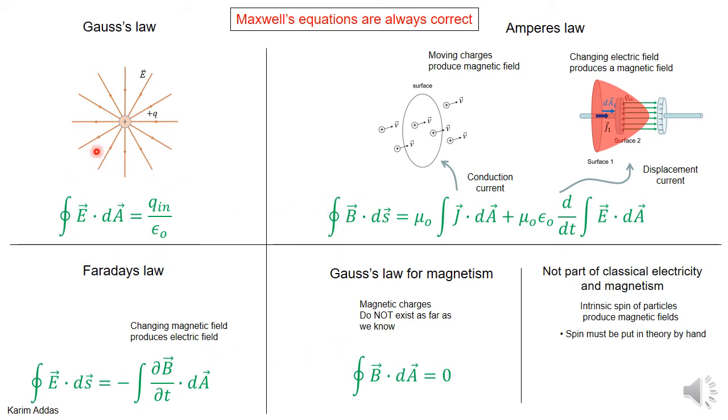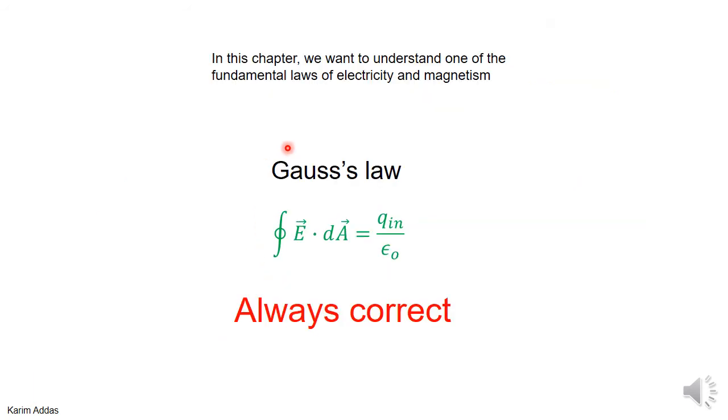We're going to study Gauss's law in this chapter - one of those four equations that's always correct. This is the mathematical form in which Gauss's law is written. As we said, it's always correct, meaning no matter how charges are moving in space or any kind of situation, it's always valid. The equation always works.